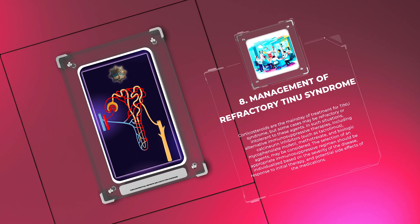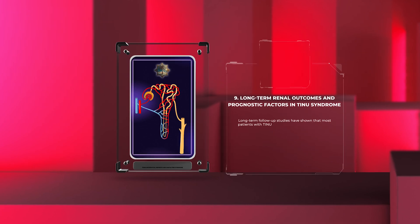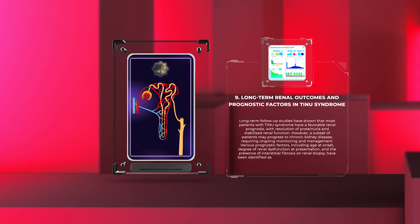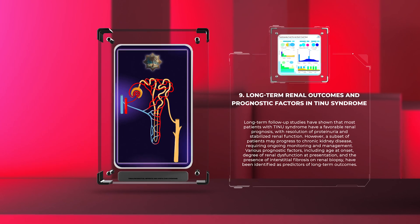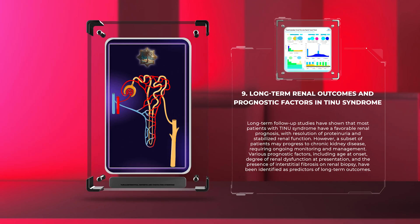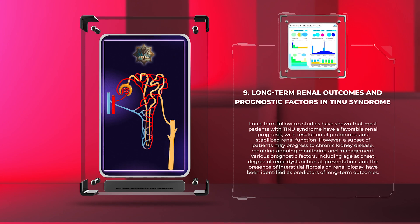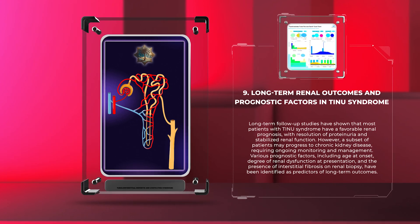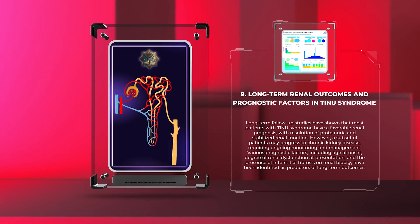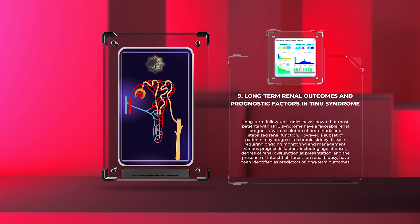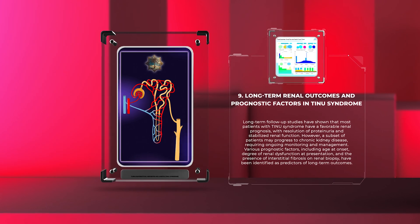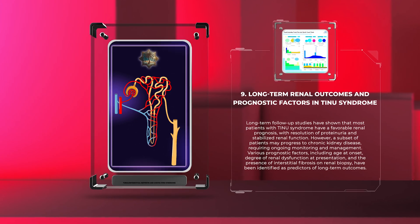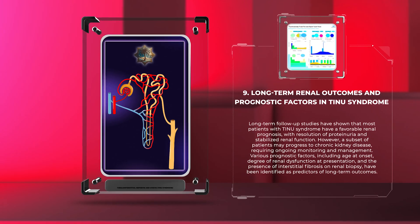Long-term follow-up studies have shown that most patients with TINU syndrome have a favorable renal prognosis, with resolution of proteinuria and stabilized renal function. However, a subset of patients may progress to chronic kidney disease, requiring ongoing monitoring and management. Various prognostic factors, including age at onset, degree of renal dysfunction at presentation, and the presence of interstitial fibrosis on renal biopsy, have been identified as predictors of long-term outcomes.